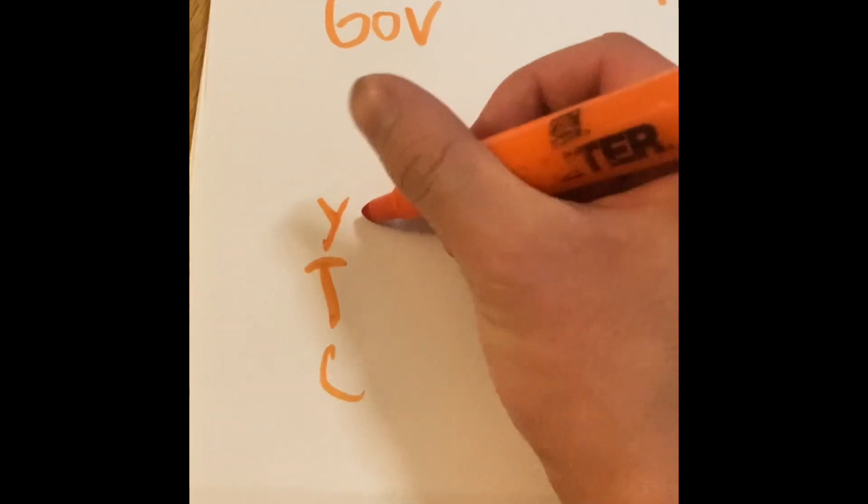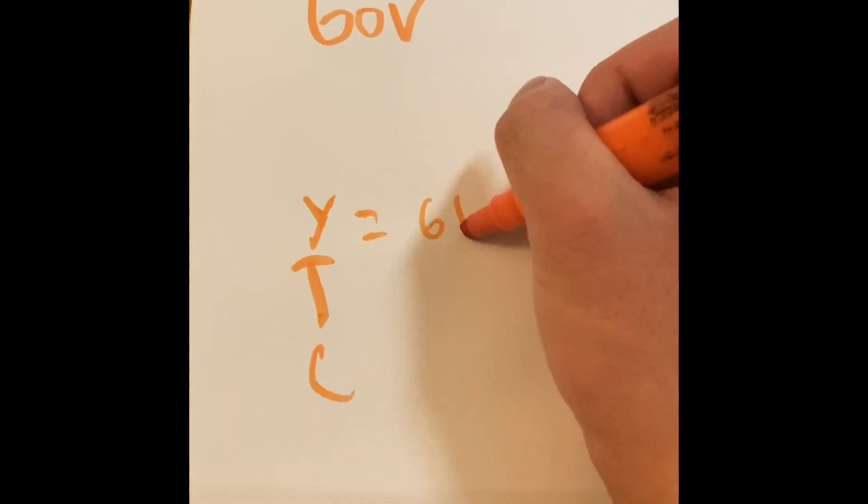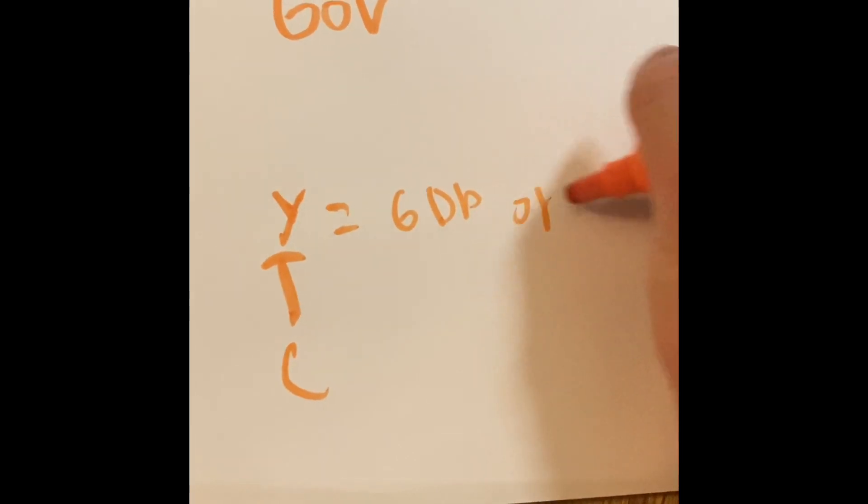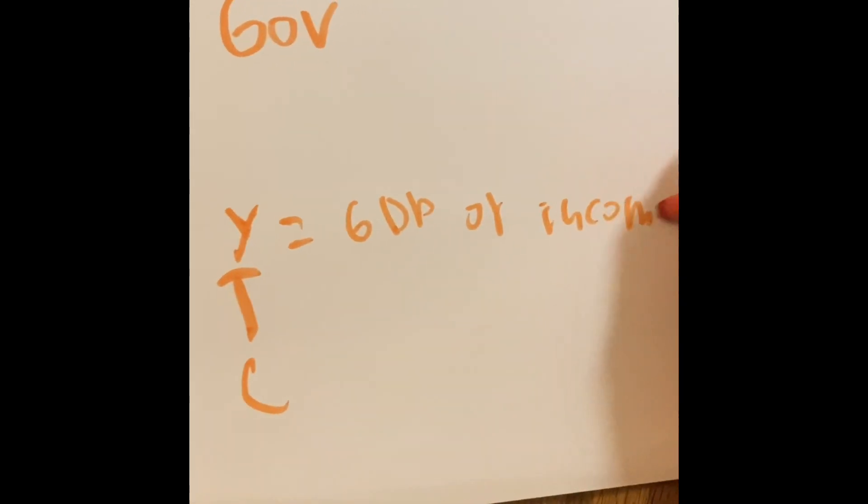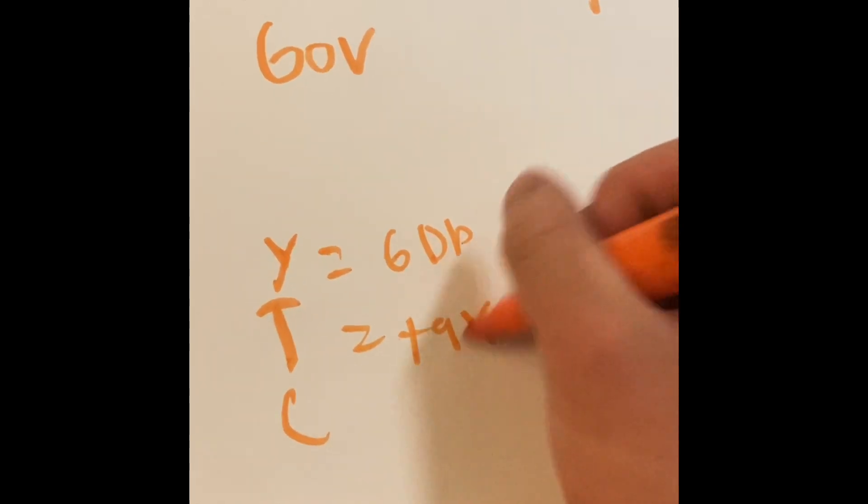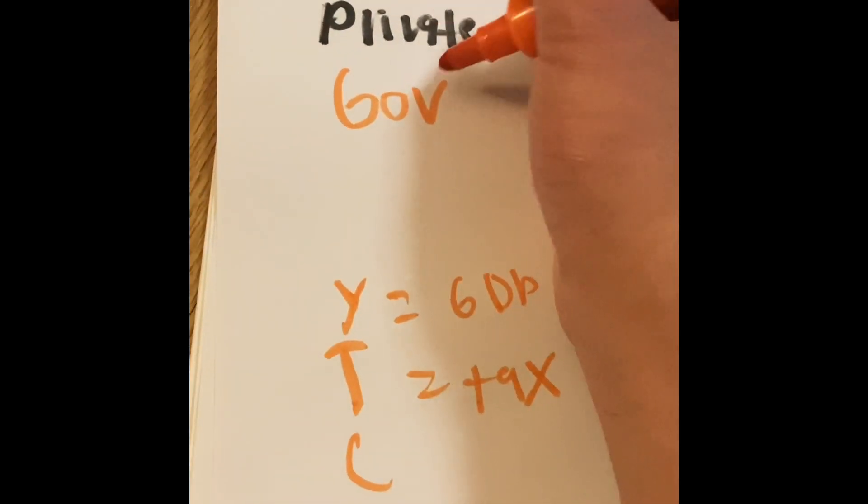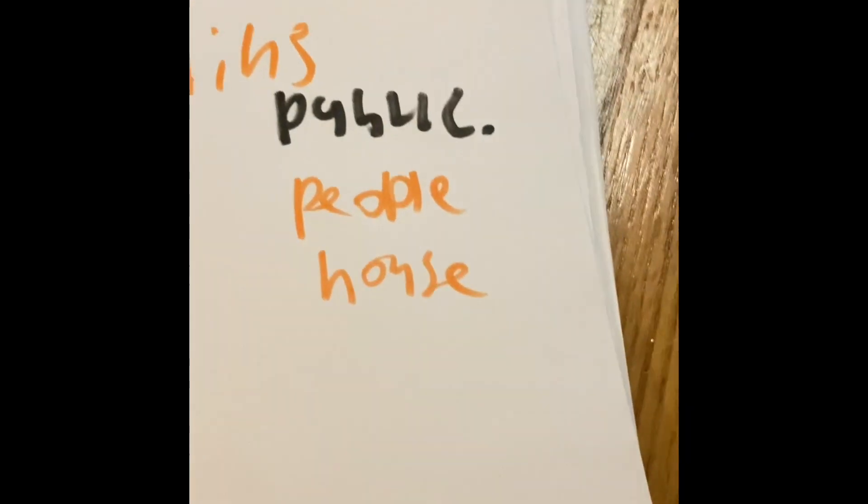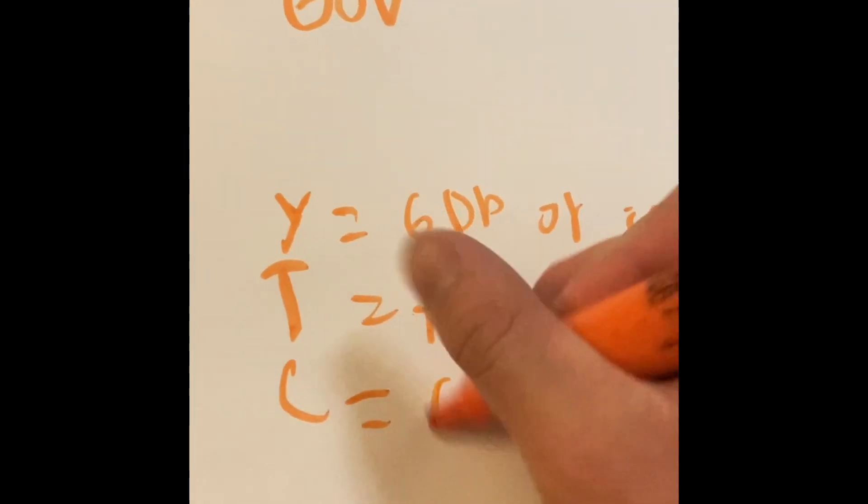Y is going to equal GDP for the government or income. The T is going to represent the amount of taxes that is being put on the government or on the public or the citizens. And C is going to be consumption.